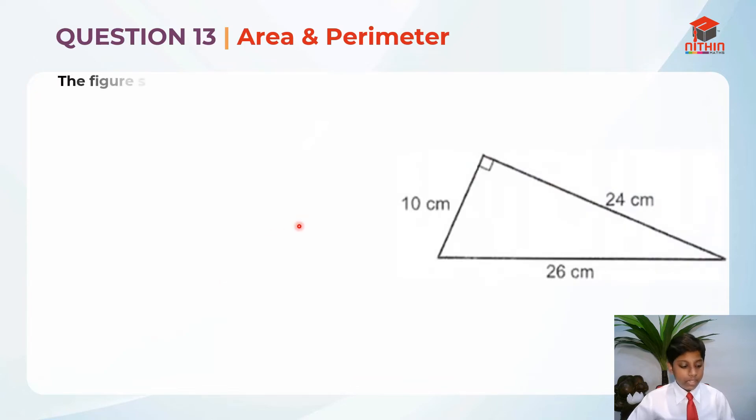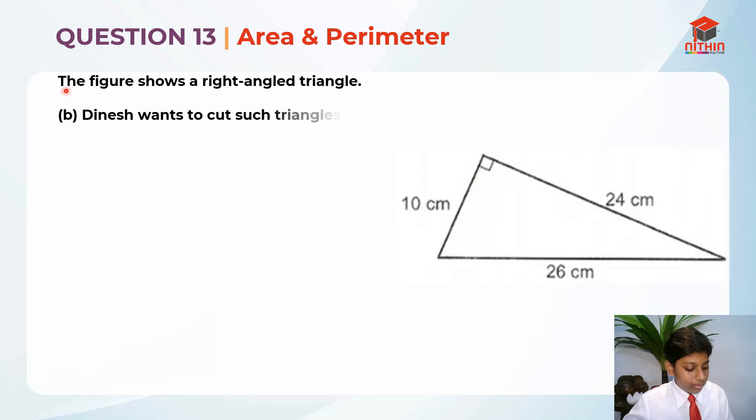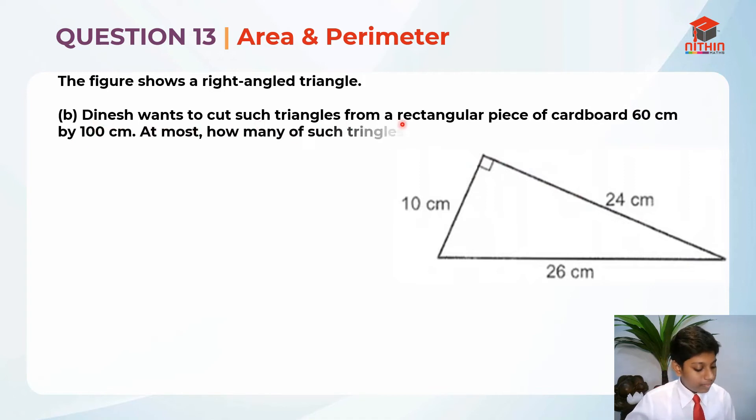So part B is a harder question. It's the same question on area and perimeter but part B is a harder type. Dinesh wants to cut such triangles from the rectangular piece of cardboard 60 cm by 100 cm. At most how many such triangles can you cut? For this question you need to visualize.